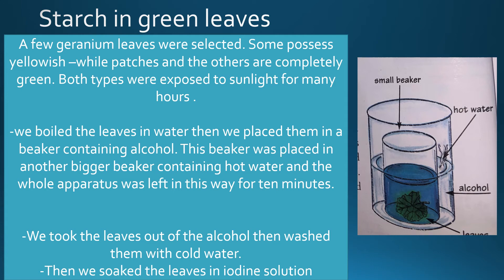Let me repeat what we did. First, we selected geranium leaves — some possess yellowish-white patches, the others are totally green — and we put them in sunlight for many hours. After that, we boiled the leaves in water, then placed them in a beaker containing alcohol. This beaker was also placed in another bigger beaker containing hot water, and we left the apparatus for 10 minutes. Then we took the leaves out from the alcohol, washed them with cold water, and performed the iodine solution test.